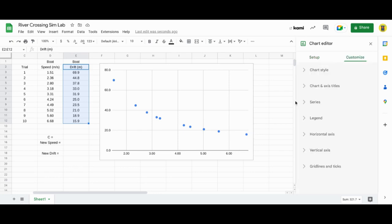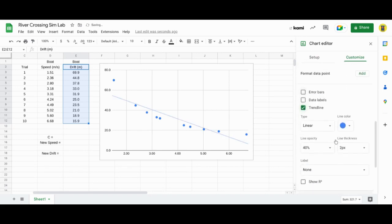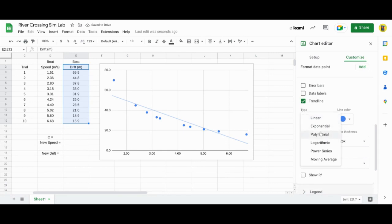Go to customize, series, scroll down to trendline, add trendline. In this case, it's a power series. So there we go.